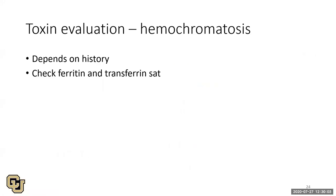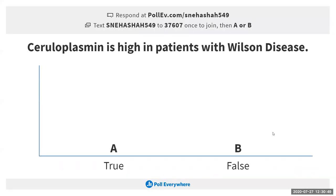For hemochromatosis workup, check ferritin and transferrin saturation. In acutely ill patients, ferritin can be elevated, but in hemochromatosis it's typically in the thousands. In women, hemochromatosis is unlikely until after menopause due to menstrual blood loss. Her ferritin was checked and was fine, leaving Wilson disease as the leading diagnosis.